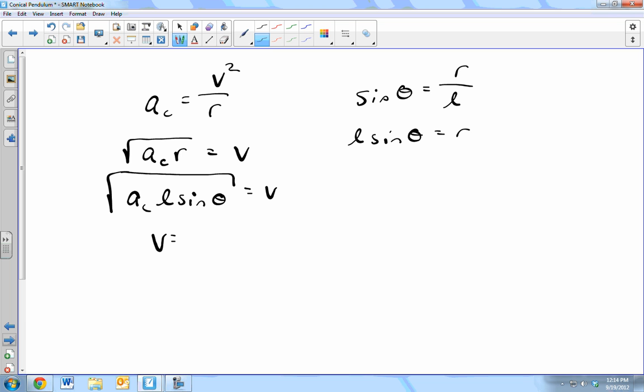5.65 times the length 0.5 times sine of 30, which is also 0.5, and take the square root of that value: 1.2 meters per second for the velocity.